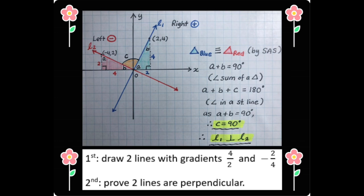Let's prove that two lines meet at 90 degrees. First, draw two lines with gradients 4 over 2 and negative 2 over 4 like the diagram. Second, we will prove that two lines are perpendicular.